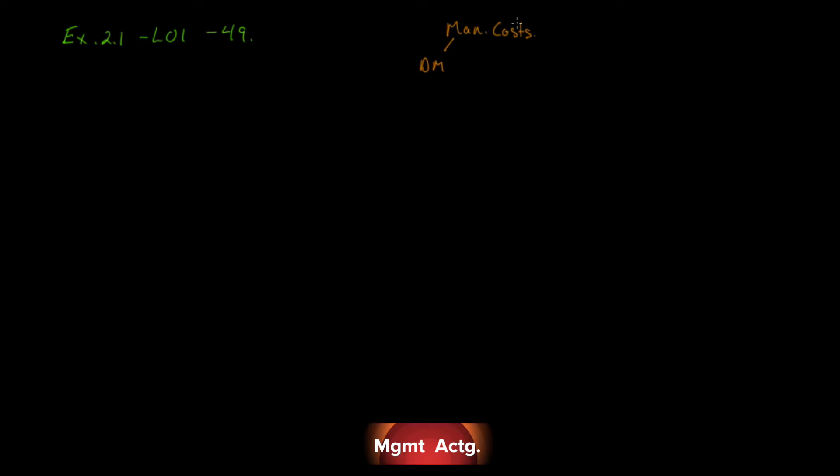Let's start with Exercise 2.1, where we're classifying manufacturing costs — that's Learning Objective 1. If you're following along in the 10th edition, you're on page 49. Before we go further, let's recall what our manufacturing costs are. There were three: direct material, direct labor, and manufacturing overhead. And we have non-manufacturing costs with two big categories: selling and admin.